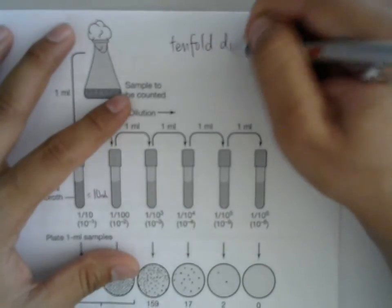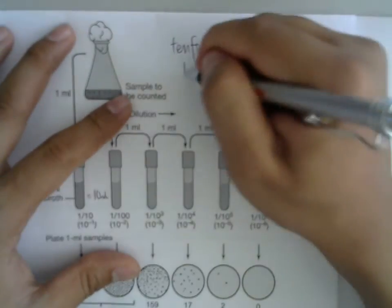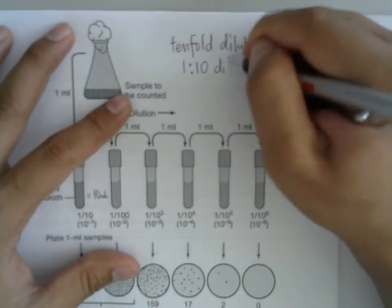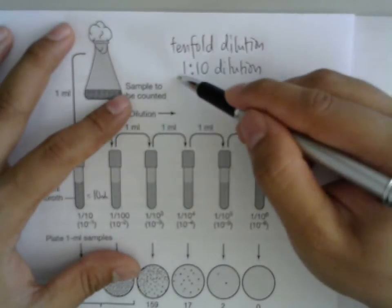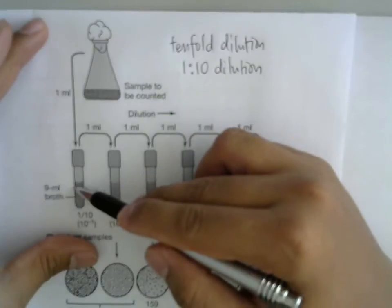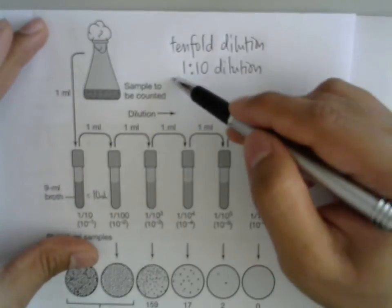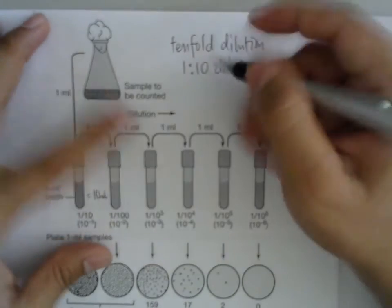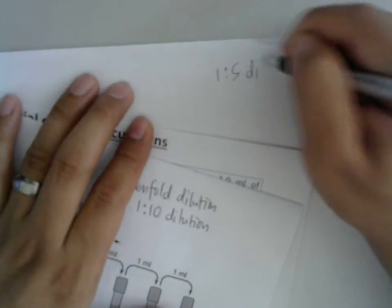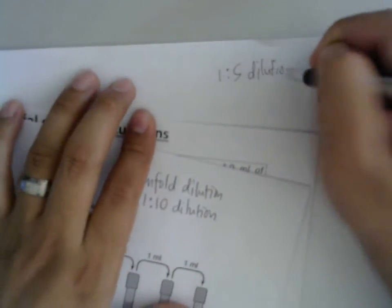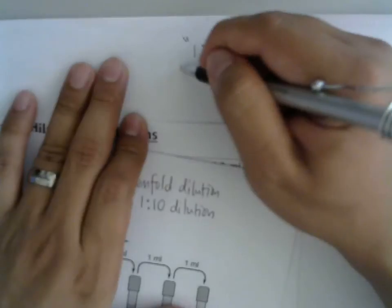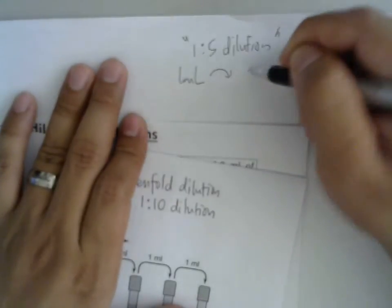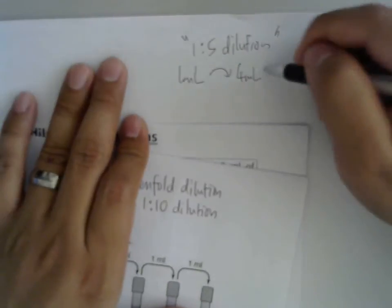A tenfold dilution can also be called a one-to-ten dilution. One-to-ten just means one mL goes into nine mL, and the total would be ten. It can also be a one-to-five dilution or any other number. To be clear, one-to-five means one mL into four mL, which gives a total of five mL.